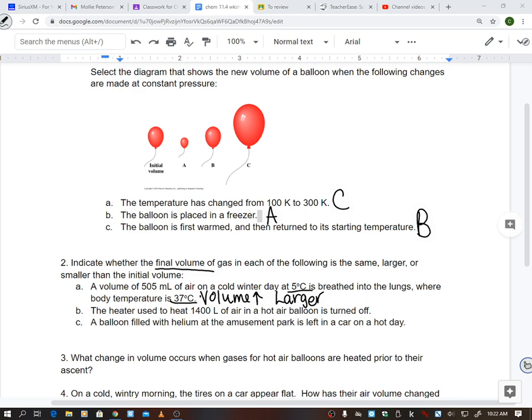B, the heater used to heat 1400 liters of air in a hot air balloon is turned off. So you're going from hot, you turn it off, and it's going to get colder. So your temperature is decreasing, which means that your volume will get smaller. Right? If you turn the heat off in a hot air balloon, it's going to deflate. And C, a balloon filled with helium at the amusement park is left in a car on a hot day. So it's hot. So that temperature is going to increase in the car, which means that your volume is going to get larger.